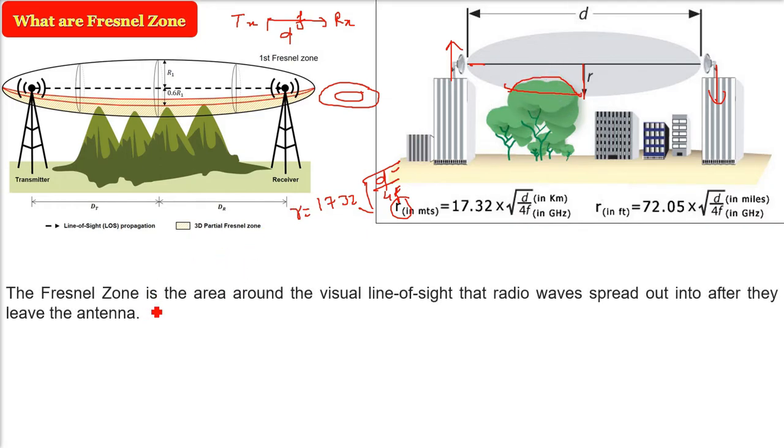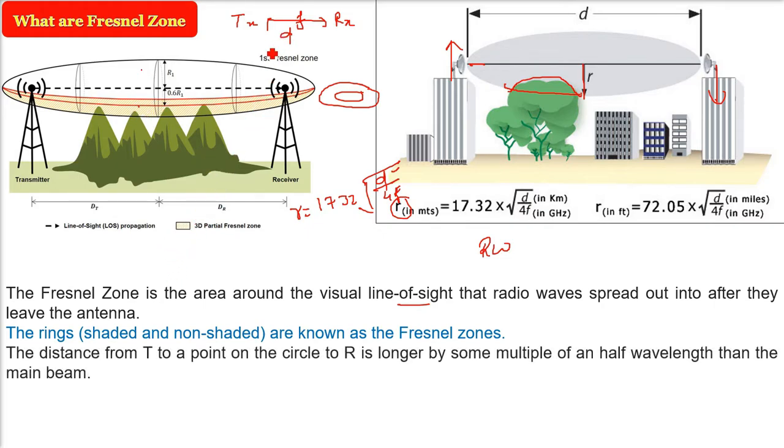So the Fresnel zone is the area around the visual line of sight that radio waves spread out into after they leave the antenna. Whenever there is a line of sight, radio waves move in certain direction that forms a capsule like structure. The rings which are shown here, the shaded and non-shaded, these are known as the Fresnel zones.